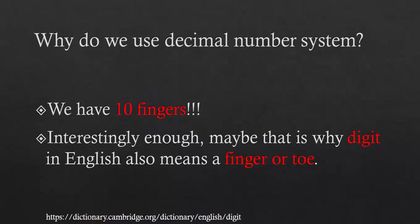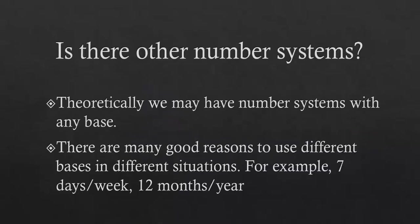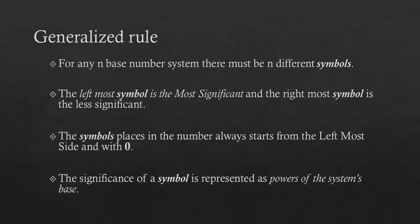Why do we use the decimal number system? Probably because we have ten fingers. According to Cambridge dictionary, digit means finger or toe. That's good support for using a decimal number system with ten symbols, zero to nine. Are there other number systems? Definitely yes. Theoretically we may have any number of systems with any base for different situations, like seven days per week or twelve months per year.